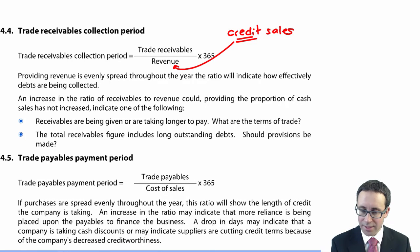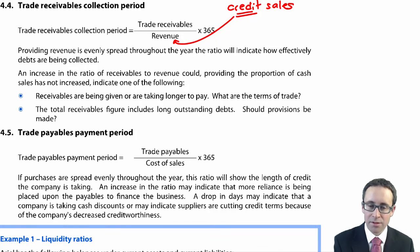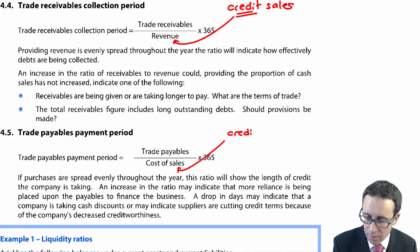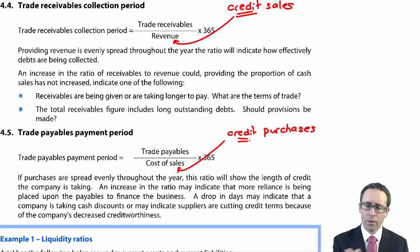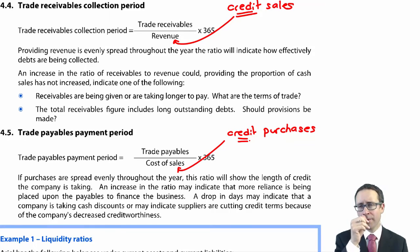We then have the trade payables payment period, or payable days. We take the payables figure from the statement of financial position, divide it by cost of sales — though specifically it should be your credit purchases — and multiply by 365 days. This shows how long you take to pay your suppliers. The longer the period, the better for cash flow, as you retain cash longer before paying suppliers.